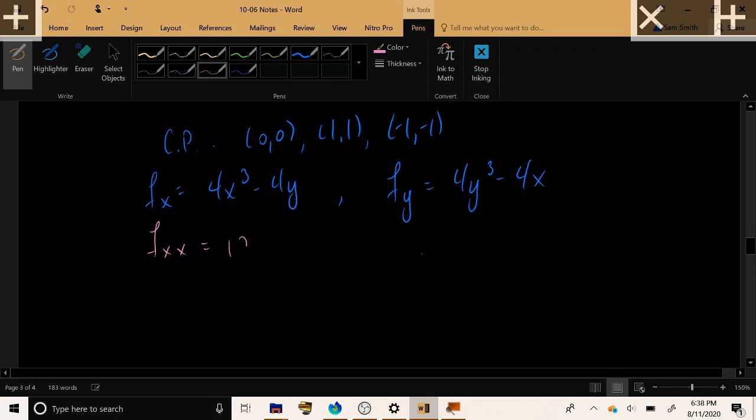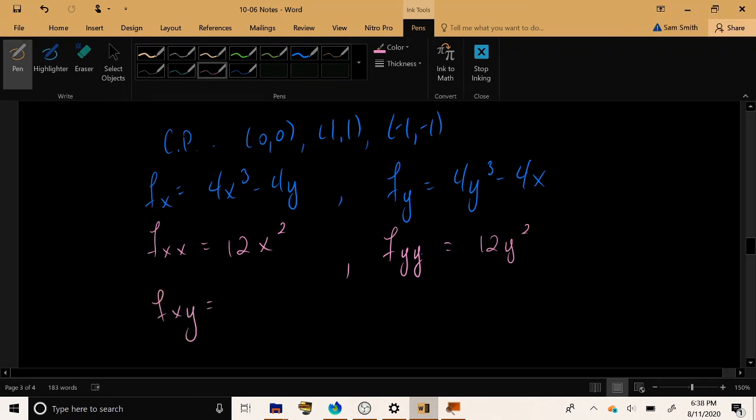So we have f sub xx. Well, I'll take the derivative with respect to x of this quantity. And we have 12x squared. Then we have f sub yy. Take the derivative with respect to y, and we get 12y squared. Finally, we have the mixed partial. Take the derivative with respect to y, or for example, the derivative with respect to x. And we get negative 4.